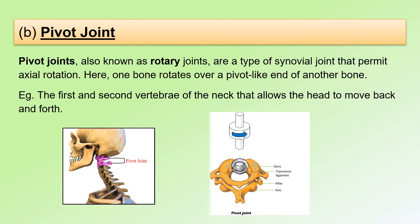Now, let's look at the pivot joint. Pivot joints, also known as rotary joints, are a type of synovial joint that permit axial rotation. Here, one bone rotates over a pivot-like end of another bone. One example is the first and the second vertebrae of the neck that allows the head to move back and forth, as seen here. The first vertebra is known as the atlas while the second one is known as the axis.